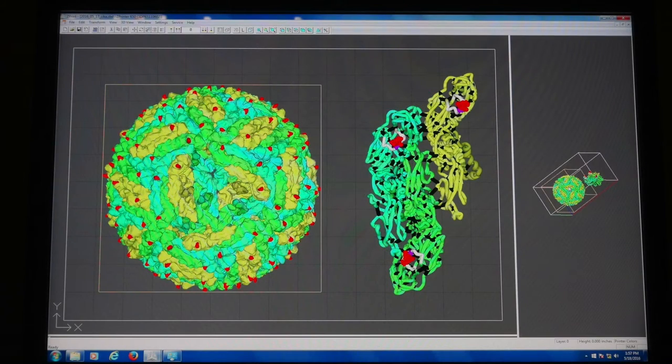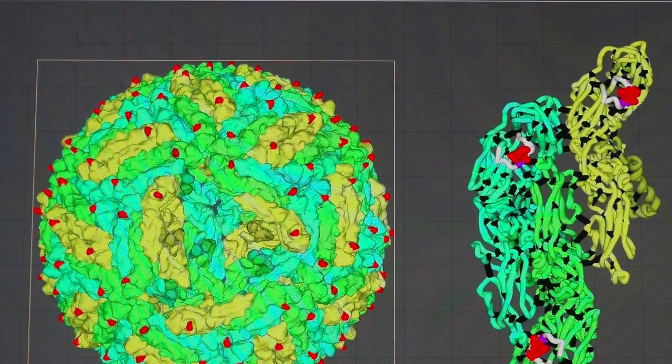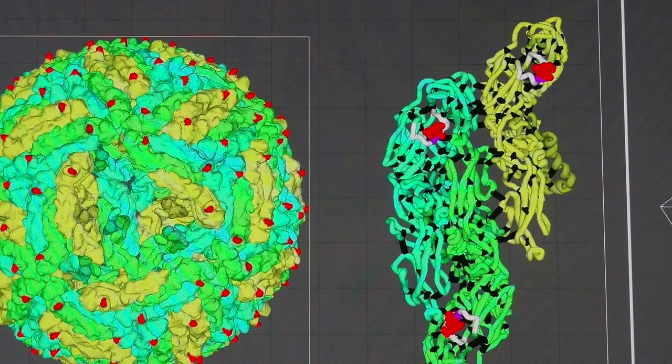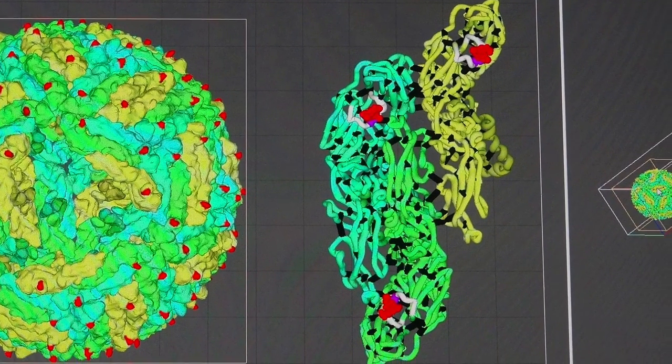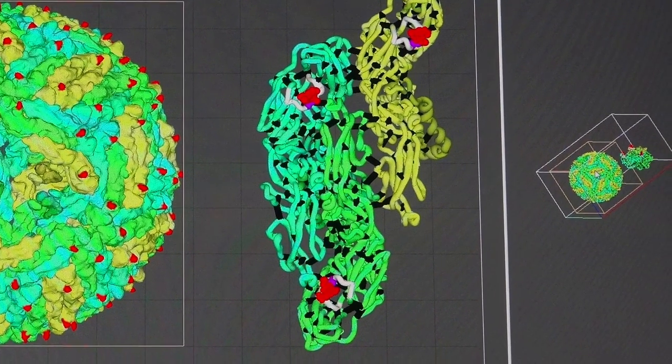Models are imported into the printing software, where final adjustments can be made. When the printer is started, the software cuts the object into layers, and applies ink and binder layer by layer until the object is completed.